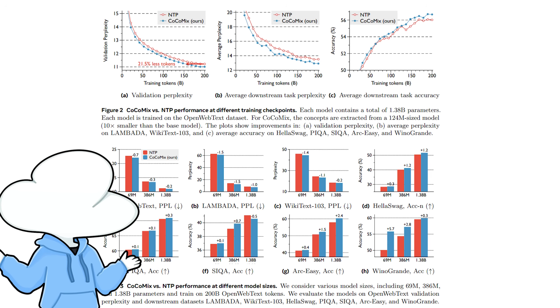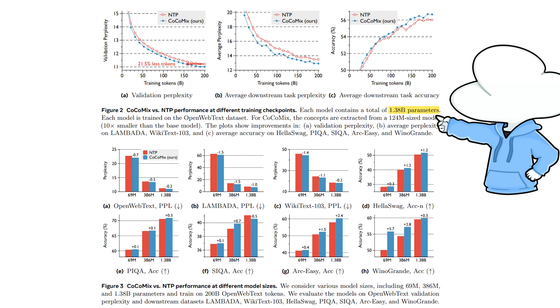On top of that, it still performed better on benchmarks across different model sizes up to a 1.38 billion parameter model, even though the improvements are definitely quite small.